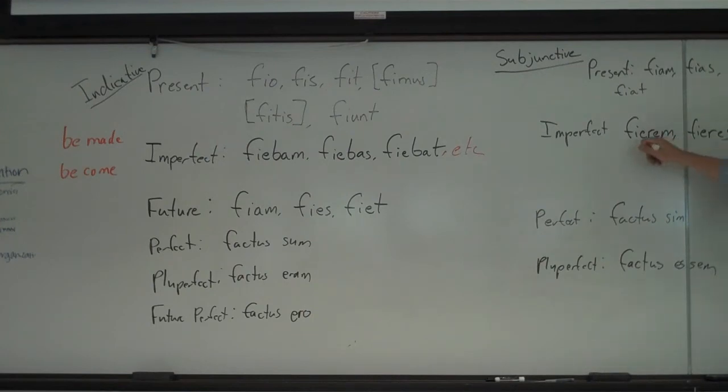Subjunctives here are factus sim and factus essem. And the imperfect form is weird. It's futurum, futurus, like that, and so forth. A couple other things that are not on here I'll add if you need to stop it and then go back.